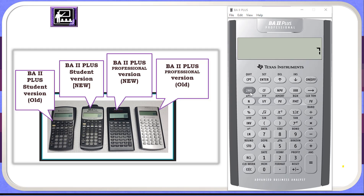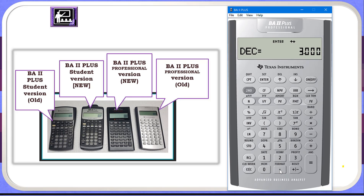To use the secondary function, we click the second shift key. The moment we click it, you will see 'second' appear on the top left of the screen, meaning secondary mode is turned on. For example, if I click the dot key now, it won't print a dot — it will perform the FORMAT function. I can see DEC, meaning I am formatting decimal places. This calculator is set to three decimal places; I will click 2 and then Enter to set it to two decimal places.